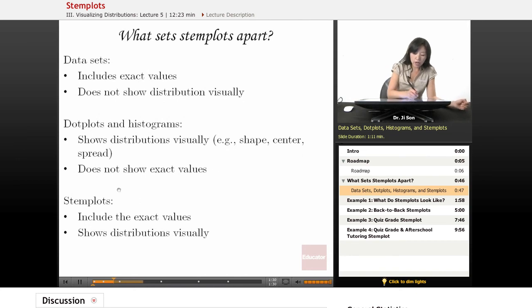Stem plots are a way of grouping values, yet they include the exact values. So it's sort of nice. It's like between the dot plot and the histogram. You can group them together, bin them together, but you can still see the exact values and it shows you the distribution visually.